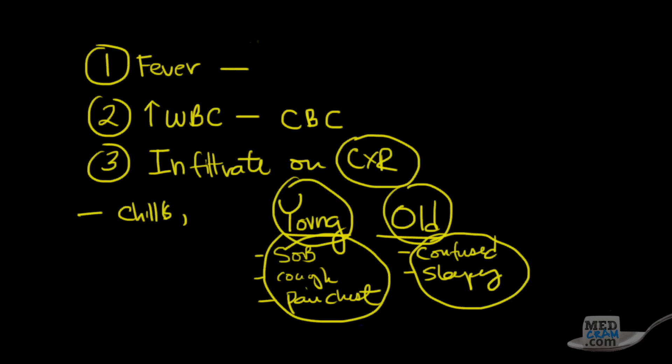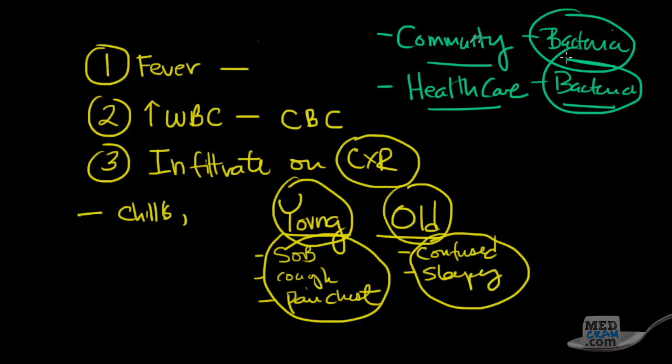The other thing that's really important is where these patients coming from. There's something called community, and then there's something called healthcare acquired. The reason why this is important is because there are different bacteria associated with each of these. There's bacteria associated with the community, and bacteria associated with healthcare, for instance pseudomonas and MRSA, which require completely different antibiotics.